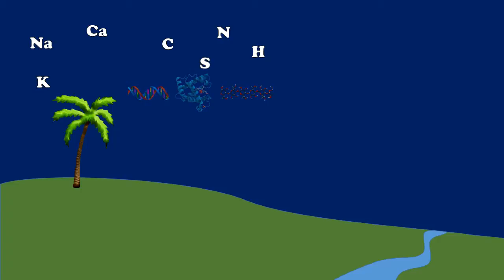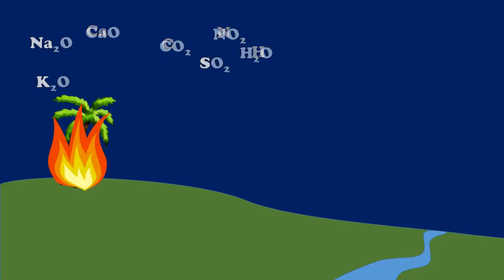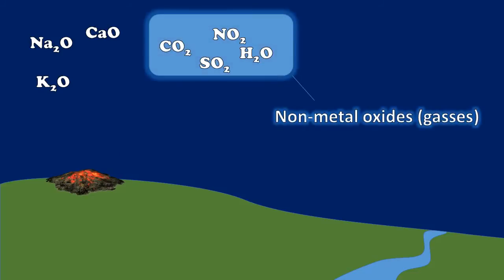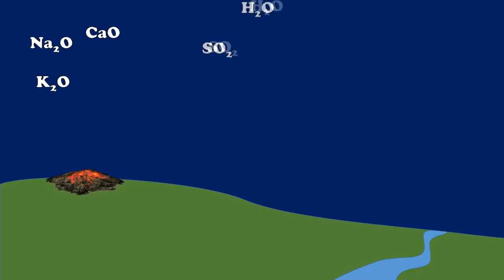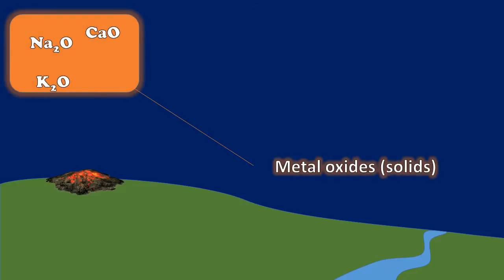When we burn wood, we get oxides of these elements. What's important to recognize is that some of these oxides are of metals and some are of non-metals. Those non-metal oxides make their way into the atmosphere and escape as gases. But the metal oxides, on the other hand, tend to be solids, and those are what remain in the ashes at the bottom of a wood fire.